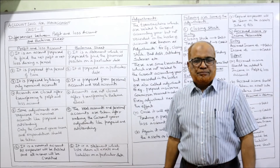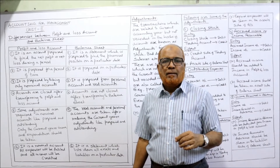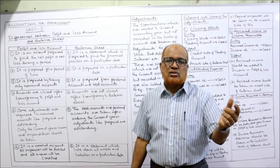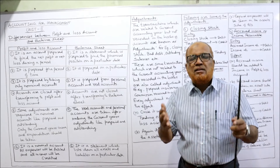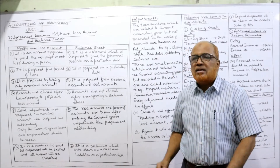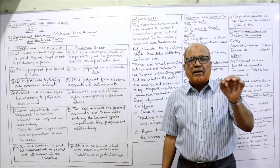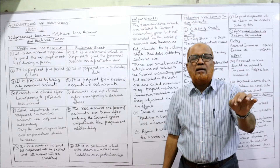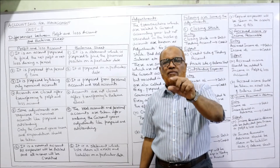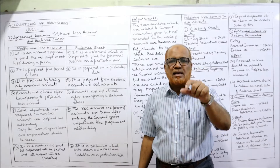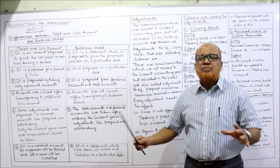Second difference — time. The profit and loss account is prepared for a period of time, normally one year. So the heading will be written 'for the year ended,' denoting it covers a period. Whereas the balance sheet is prepared on a particular date — at a particular moment, showing what assets and liabilities exist. That is why the balance sheet heading reads 'as on' or 'as at' a specific date.